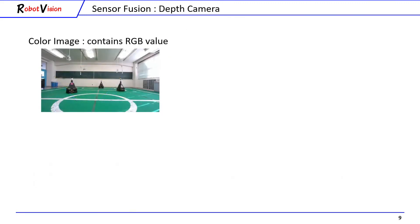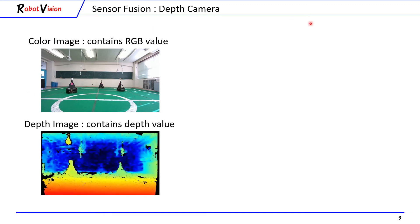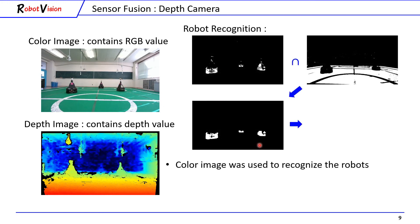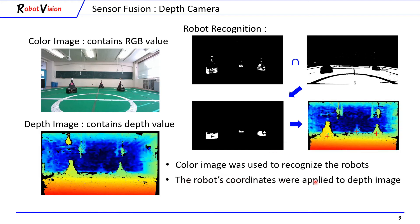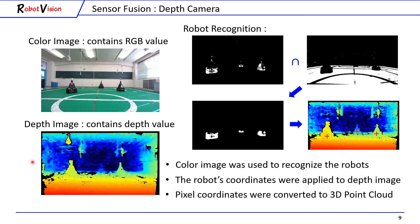What is a depth camera? A normal camera captures a colored image where every pixel contains an RGB value. Besides the colored image, a depth image can be obtained with a depth camera. Every pixel of this depth image contains a distance value from the camera, represented by color: red represents the closest distance, while blue represents the farthest distance. From this color image, we do traditional image processing to recognize the robot. Then the calculated robot coordinates are applied to the depth image and converted to a 3D point cloud, where actual XYZ coordinates can be obtained.